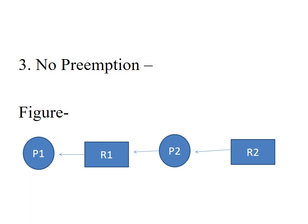The next state of deadlock characterization is no preemption. A resource cannot be preempted from a process by force; a process can only release a resource voluntarily. In the given diagram, process P2 cannot preempt resource R1 from process 1 — it will only be released when process 1 releases it voluntarily after its execution is complete. This state is called the no preemption condition.